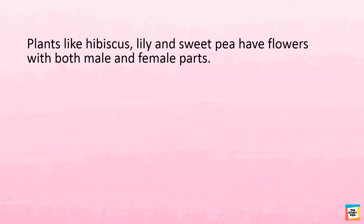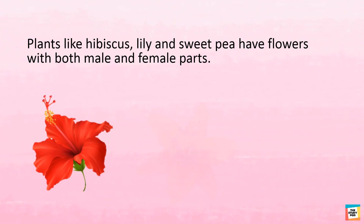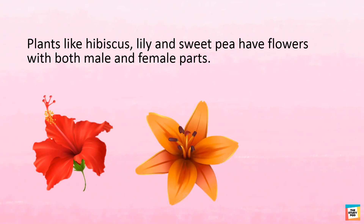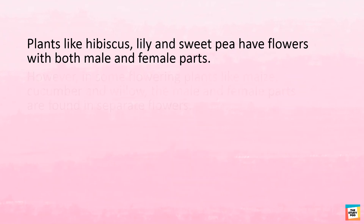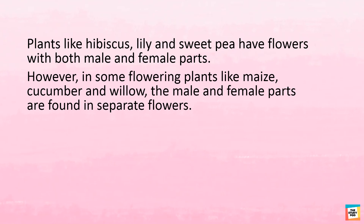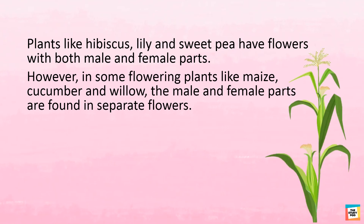Plants like hibiscus, lily, and sweet pea have flowers with both male and female parts. However, in some flowering plants like maize, cucumber, and willow, the male and female parts are found in separate flowers.